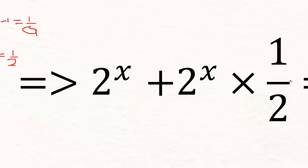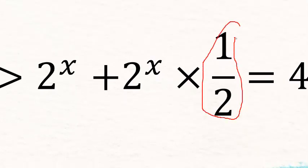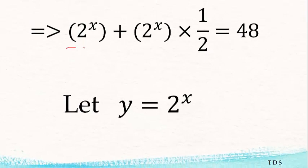Since we have 2 to the power x appearing in both terms, we have two ways of solving this. The first method I prefer is representing 2 to the power x by a variable. Let's say 2 to the power x equals y.